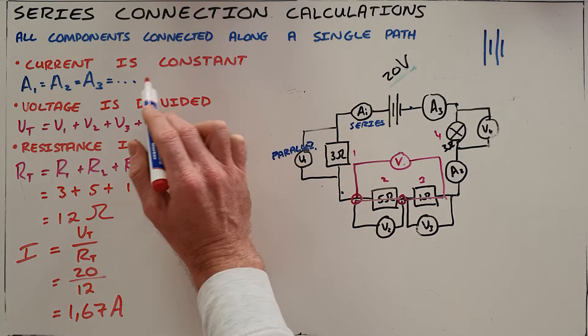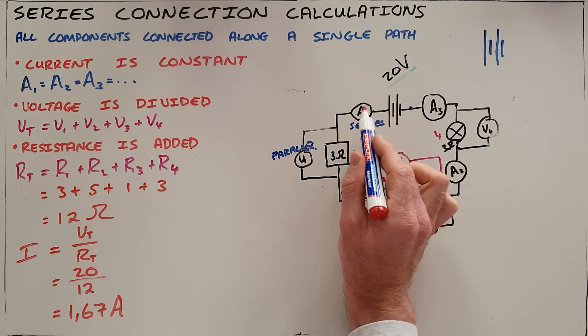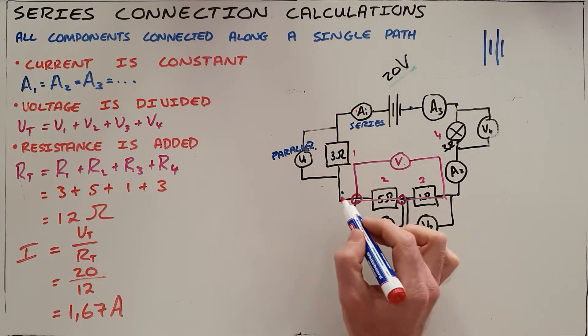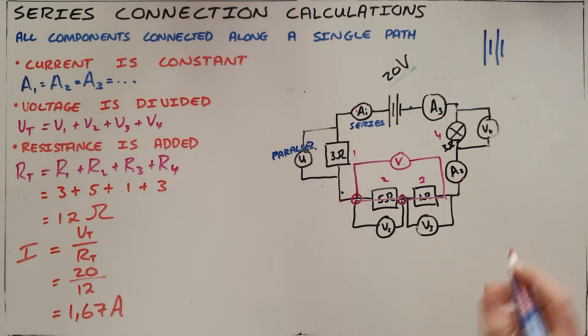And because we know our rules for series connections, we know that the current at this point is 1.67, and this point is 1.67, and this point, and this point, the current is constant everywhere in that circuit.